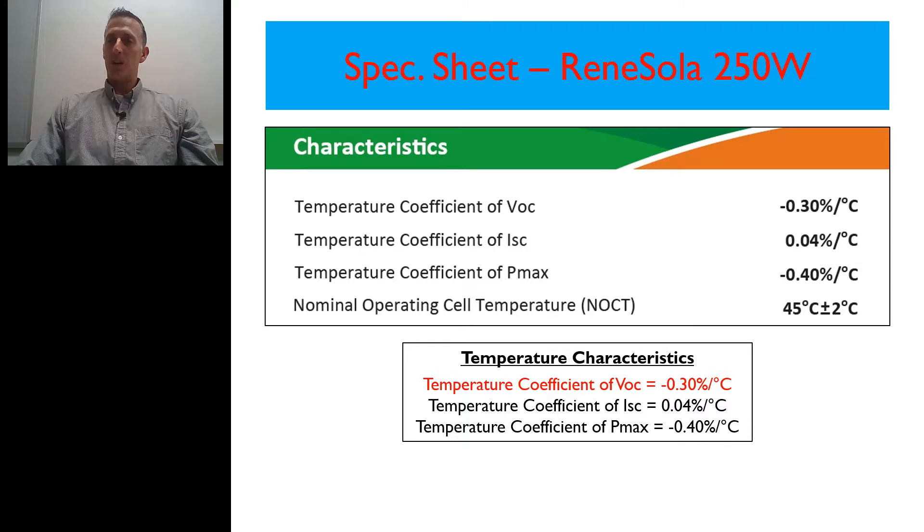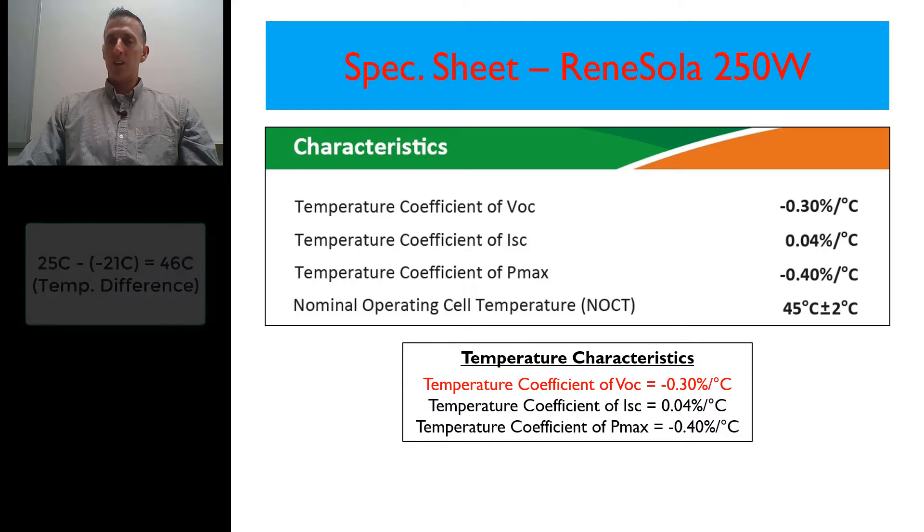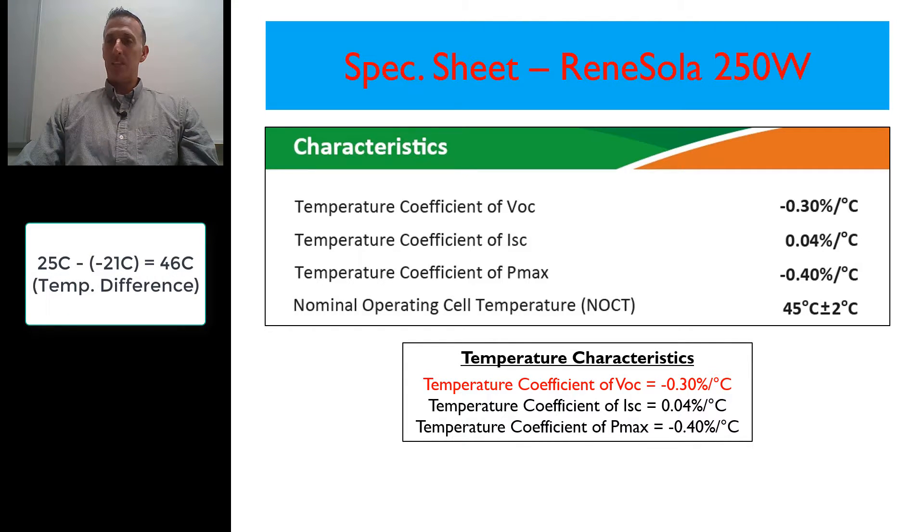is basically negative 21 degrees Celsius. So if we look at the difference between 25 degrees Celsius rating of the module and the negative 21 degrees Celsius that the module could be exposed to, there is a 46 degree temperature difference.